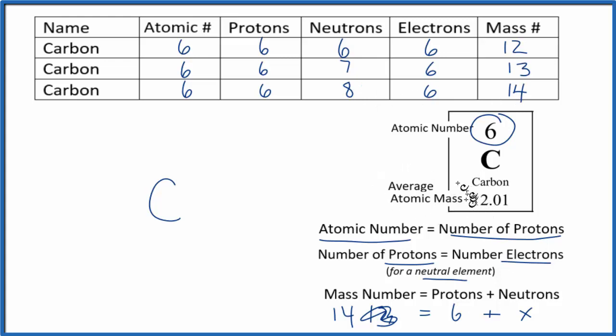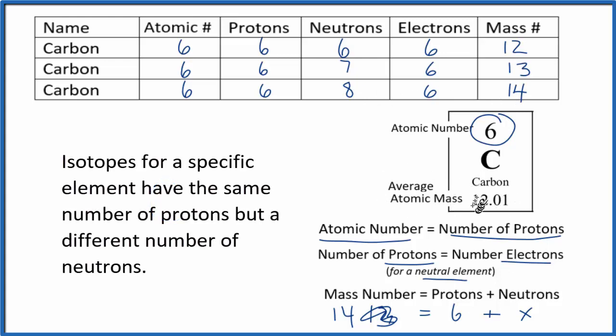When we see this average atomic mass, this 12.01 on the periodic table, that's an average of the different isotopes based on their abundance.